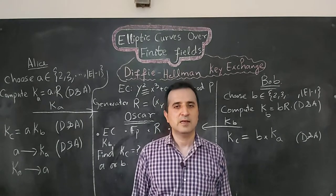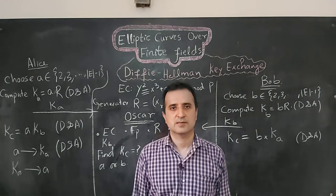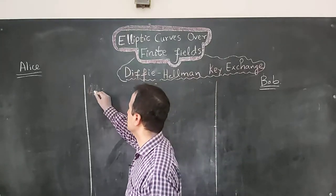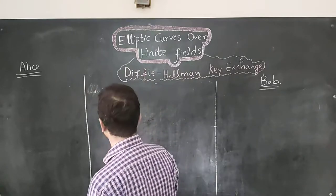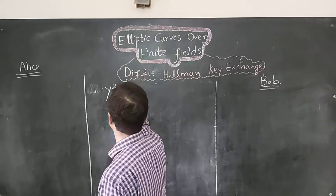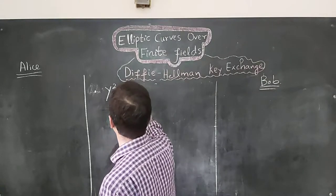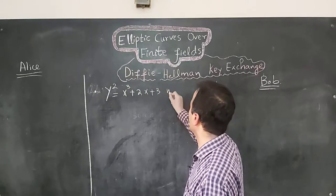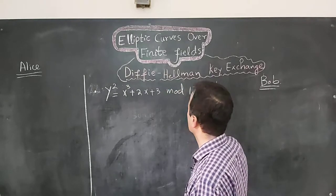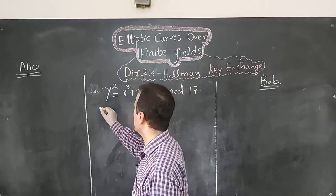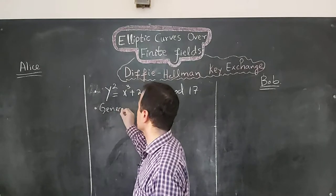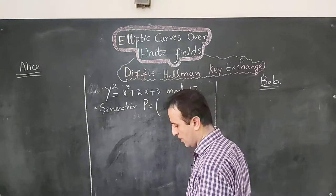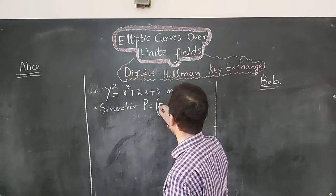Before concluding, let's do an example of Diffie-Hellman key exchange. Alice and Bob first decide on the public parameters: the elliptic curve equation y² = x³ + 2x + 3 defined on the prime field F₁₇. They also decide on a generator point P on the elliptic curve, with coordinates (5, 11).